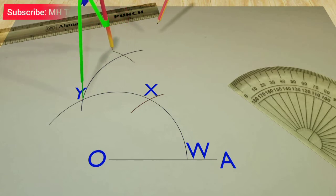Then construct an arc from point Y till it intersects the third arc. This point of intersection is Z.